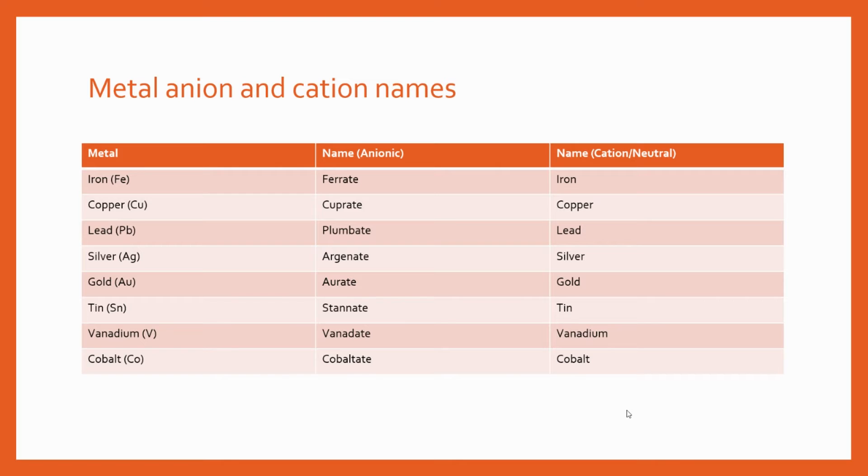So you've got anions, cations or neutral and it depends what charge is present as to what you're going to name the metal in the name of the coordination complex, coordination compound or the complex ion. So if you had iron for example we would be calling it ferrate in ionic conditions or just iron if it was a cation or neutral. Likewise copper would be cuprate in ionic conditions and copper if it was a cation or neutral. You'll notice that these are generally coming from Latin and so you might recognize the Latin names here and that's how you're going to come up with these names.